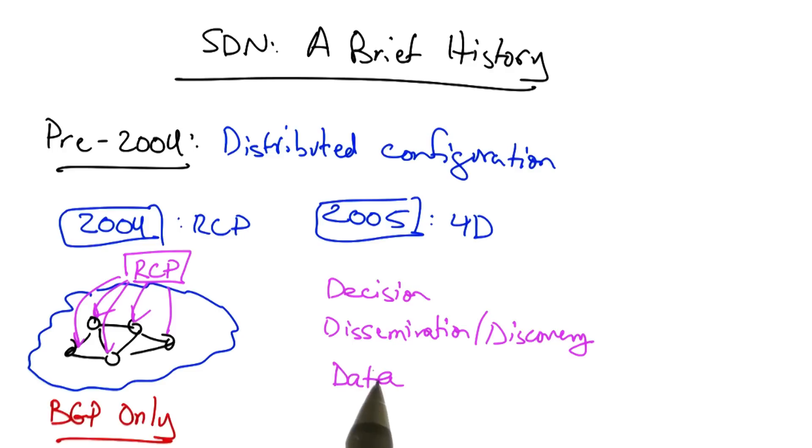In 2005, researchers generalized the notion of the RCP for different planes. The decision plane, which computed the forwarding state for devices in the network. The data plane, which forwarded traffic based on decisions made by the decision plane. And the dissemination and discovery planes, which provide the decision plane the information that it needs to compute the forwarding state, which ultimately gets pushed to the data plane.